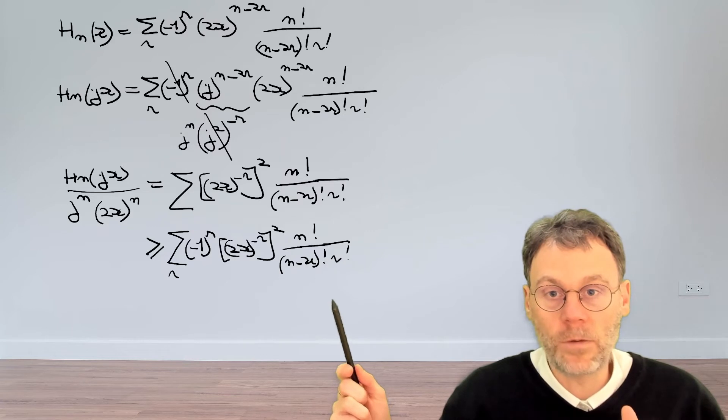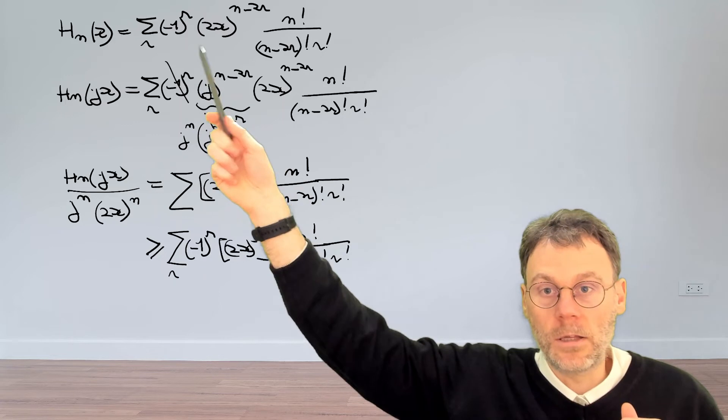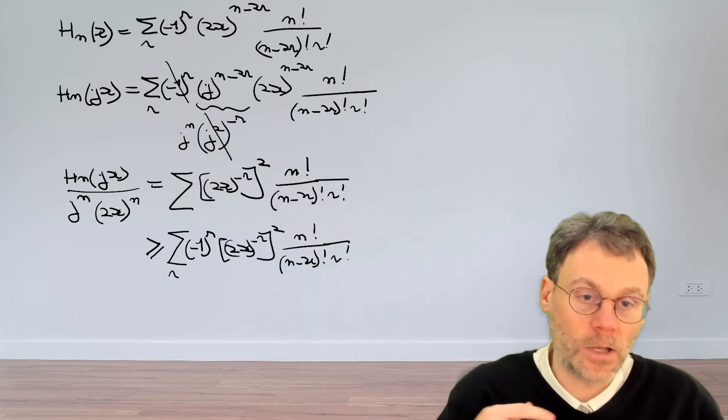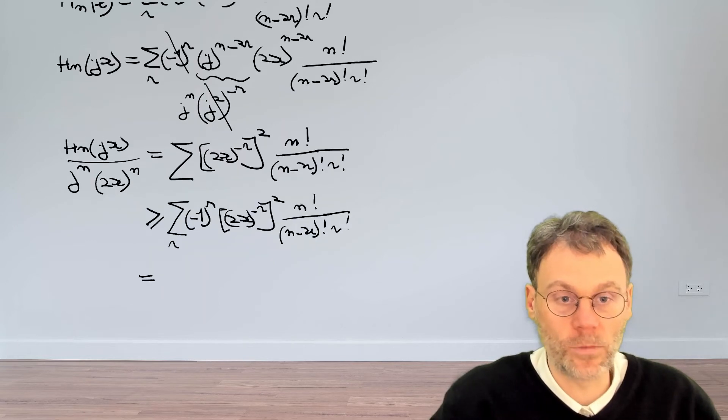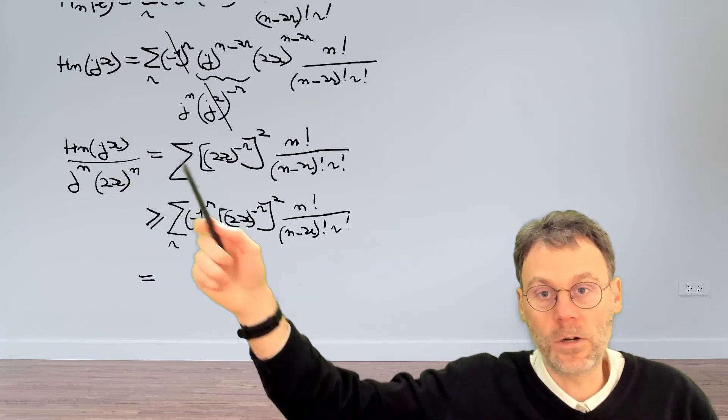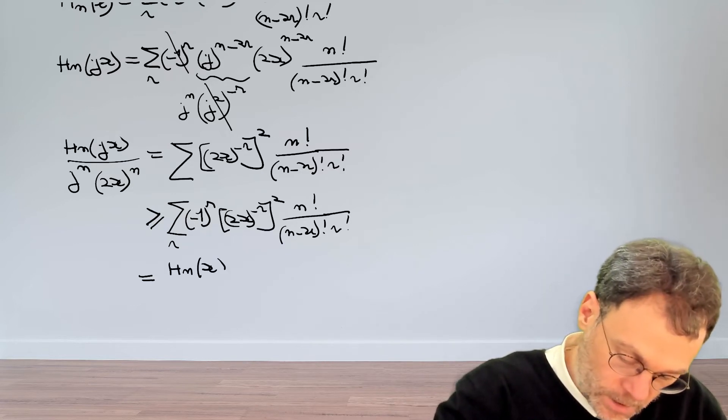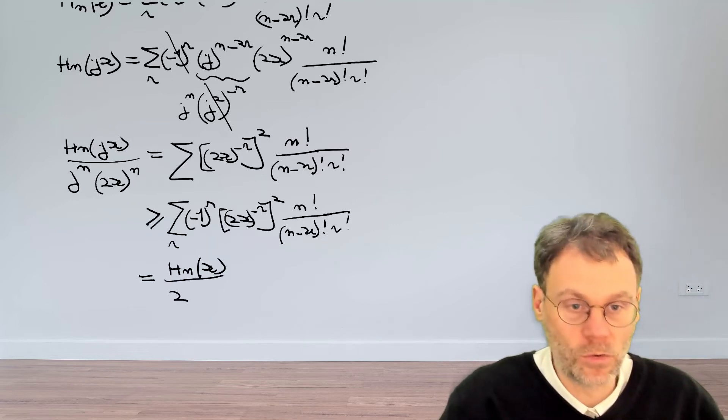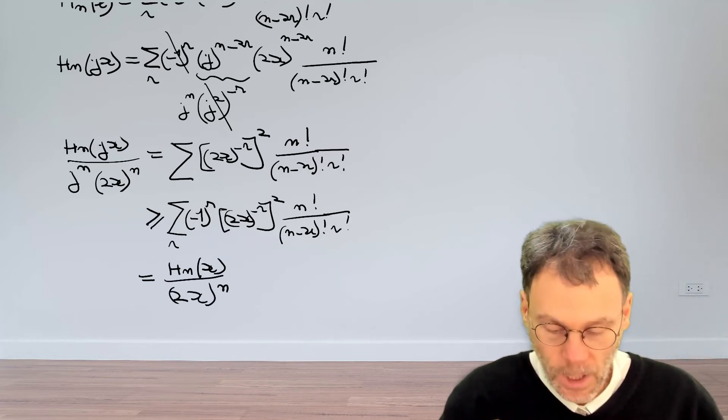So if we compare what we have here with what we had originally up there, then you see we basically have Hn(x), but of course we have this extra term 2x to the power of n, which we've gotten rid of here, which we then would need to bring back. So this is Hn(x) divided by 2x to the power of n. Good.